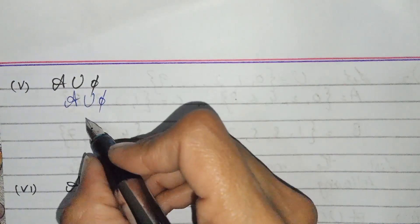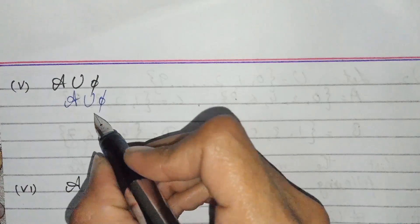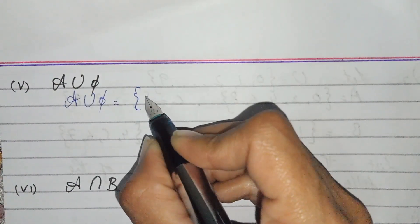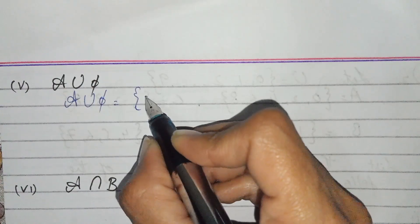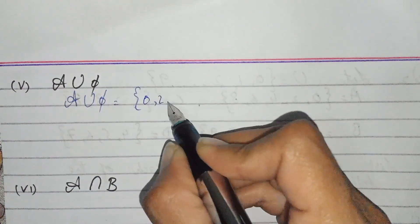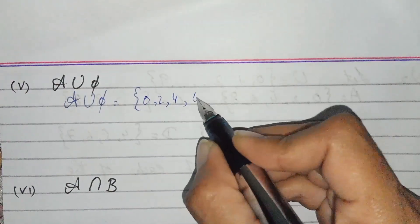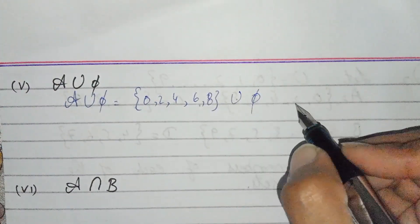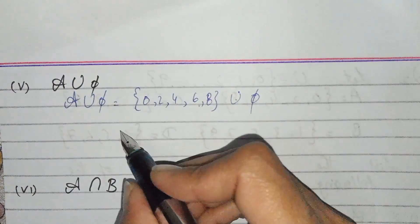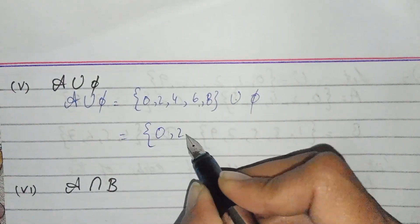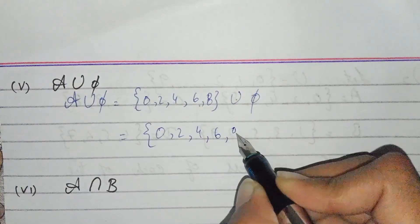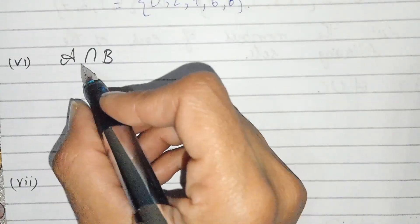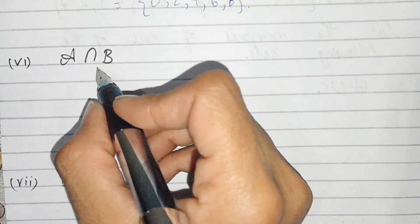Now A union empty set: A is {0,2,4,6,8} and we combine it with the empty set, and we get the set A, which is {0,2,4,6,8}.